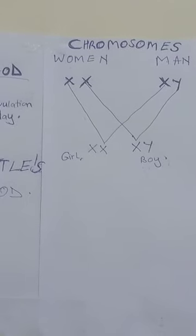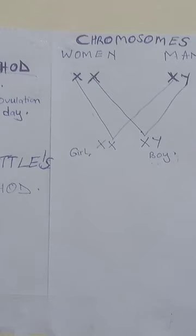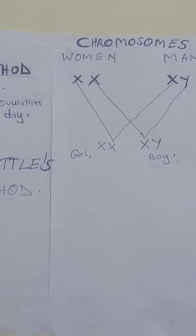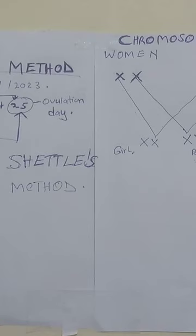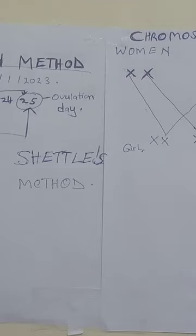Dr. Shettles came up with various differences between boy sperm and girl sperm during reproduction. He stated that the boy sperm are faster to travel than the girl sperm.